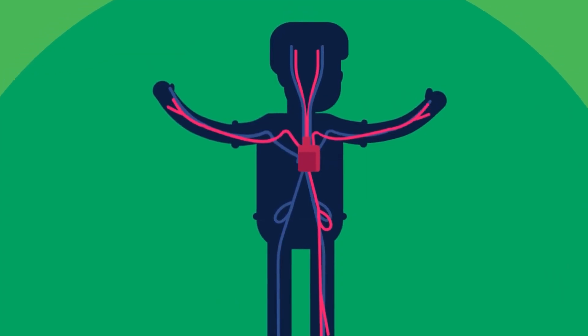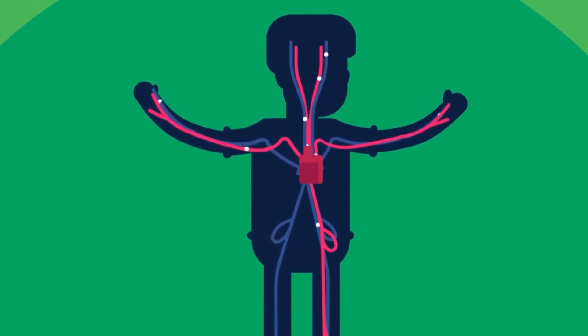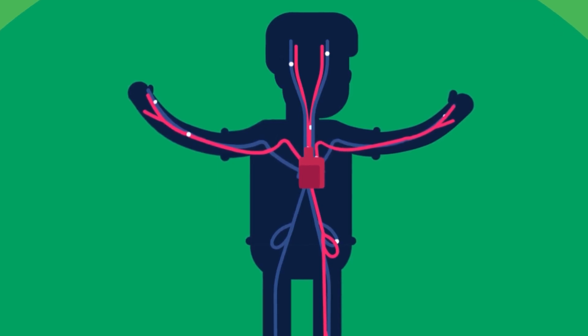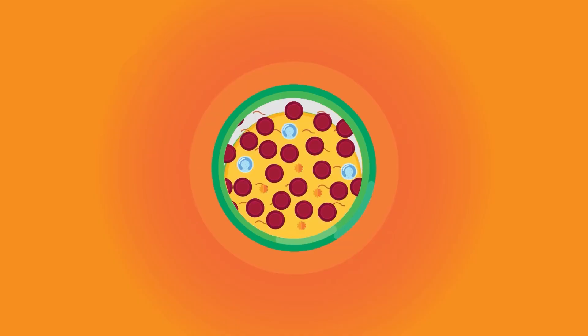Blood is a body fluid in humans and other animals that delivers necessary substances such as nutrients and oxygen to the cells. In vertebrates, it is composed of blood cells suspended in blood plasma.